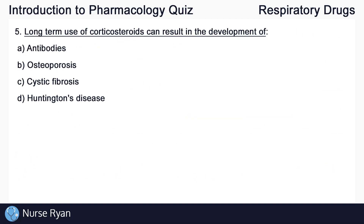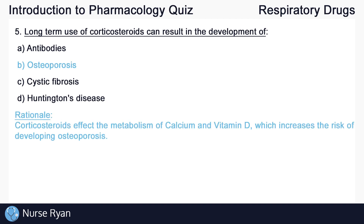Question number five. Long-term use of corticosteroids can result in the development of... The answer here is B, osteoporosis. Corticosteroids affect the metabolism of calcium and vitamin D, which increases the risk of developing osteoporosis.